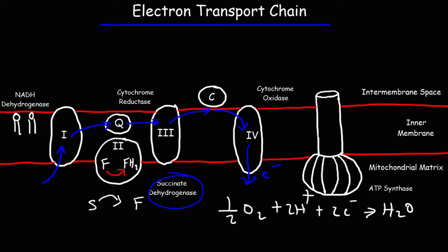In the electron transport chain, FADH2 gives up those hydrogens and electrons, turning back into FAD — it's a cyclic process. As FADH2 turns to FAD, the electrons are picked up by ubiquinone, which carries them to complex three, then to cytochrome c, and then to complex four.